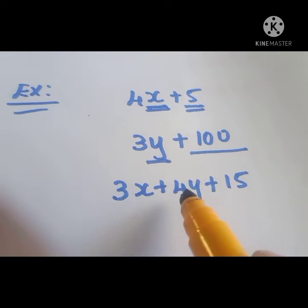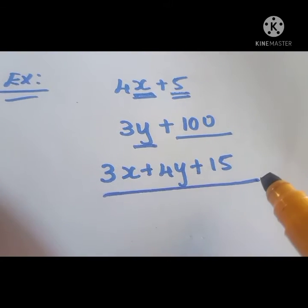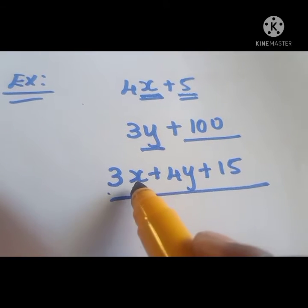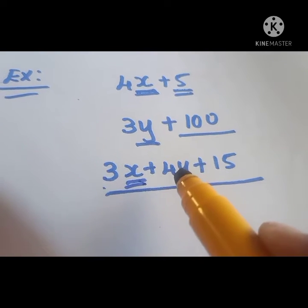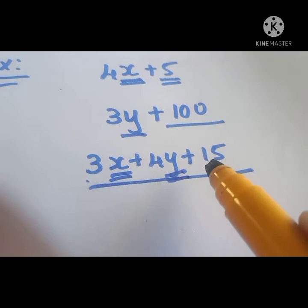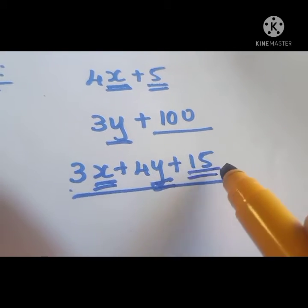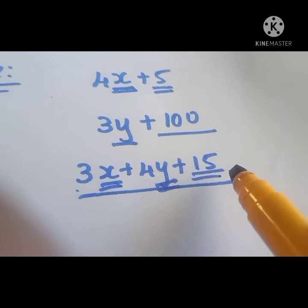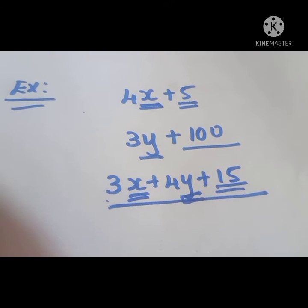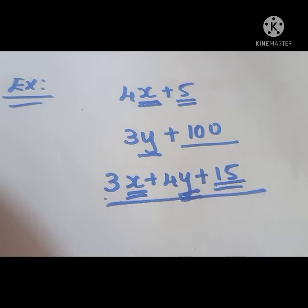Here, 3x plus 4y plus 15 is an Algebraic Expression. In this, x is a variable, y is a variable, and 15 is a constant. So, we are able to know what is a variable and what is a constant.